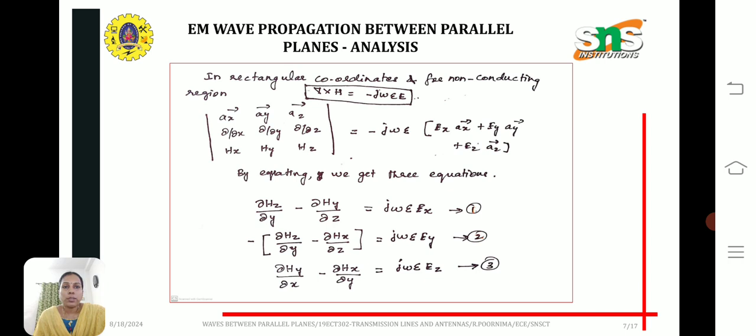The determinant matrix is written in rectangular coordinates. By substituting the e vector and equating the two terms of curl equation and electric field, we get these three equations.